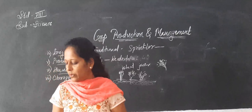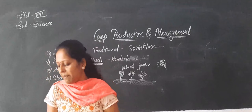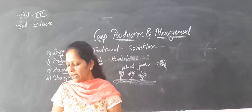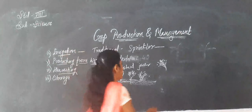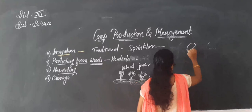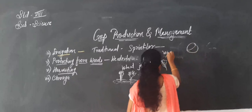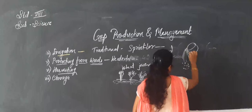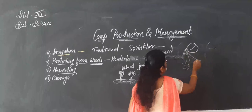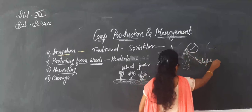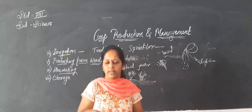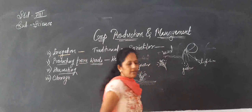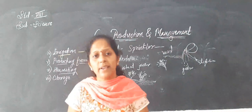Farmers with small holdings of land do the separation of grain and chaff by winnowing. When wind is blowing, the grains fall on the ground — heavy grains fall nearby and lighter material like dust, leaves, and stalks is blown away. This method is called winnowing.